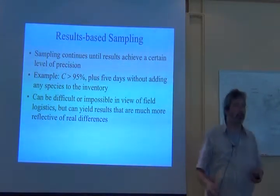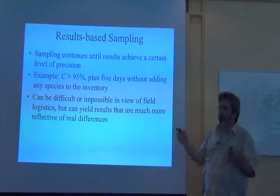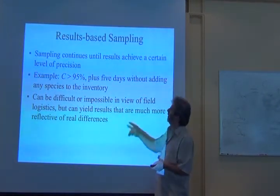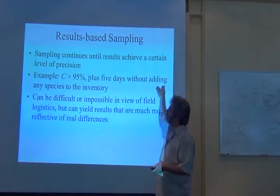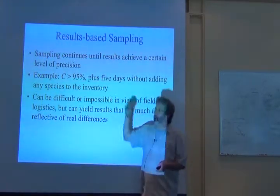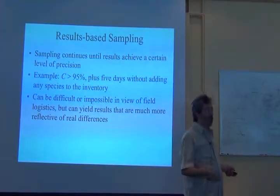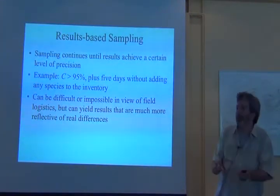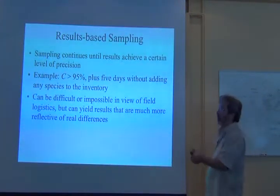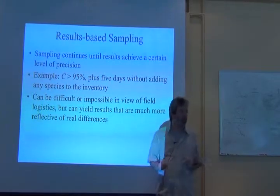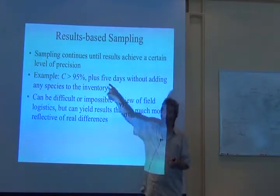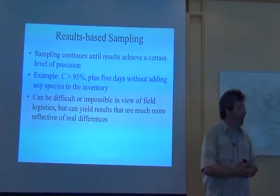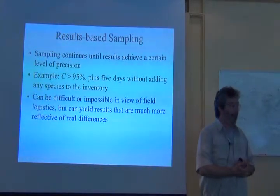The weather changes, or it could even be activity patterns of the species. But we might want to add in something like a number of days without adding new species. Both of those — the threshold and the stability criterion — are in some sense a measure of completeness.